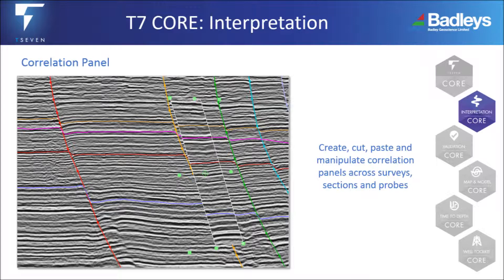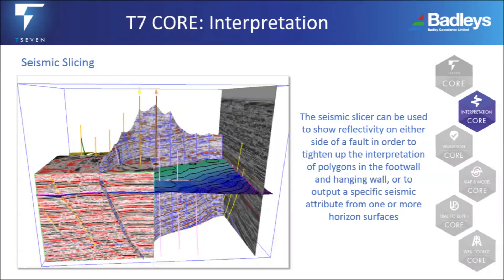The correlation panels can then be manipulated — stretched, extended, rotated, flipped horizontally or vertically, or moved in any direction. Use the seismic slicing tool to view your seismic and interpret directly upon fault and horizon surfaces.